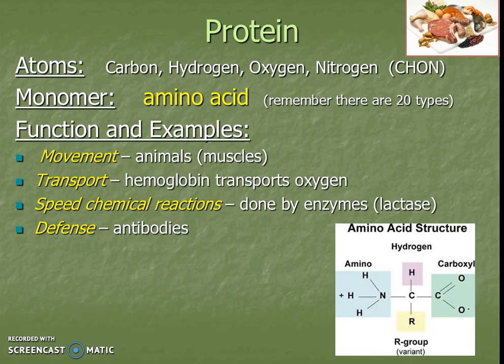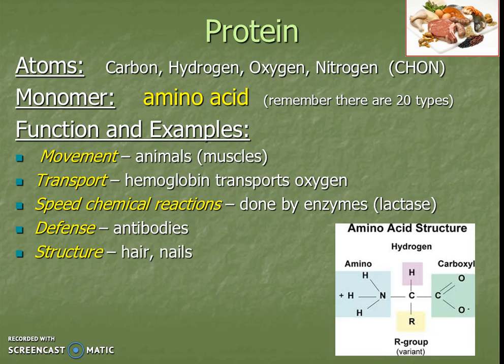There are also defense proteins, which are called antibodies. Proteins also serve structural roles — hair, nails, and bones are made of proteins. Most of our major genetic traits end up being expressed as proteins, such as hair color and eye color. We've been learning about this throughout the year, and now we're pulling it all together from previous units.